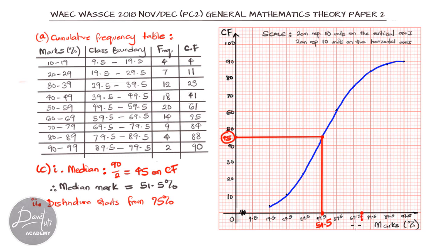From there, we can trace that up to our curve. This is 75%, that's the least mark for distinction. You can trace it up to our curve. And then we can see that correspondingly, this is giving us 80 on our cumulative frequency axis. If 75% is amounting to 80, and of course that's the least mark, then some can actually get higher than that.